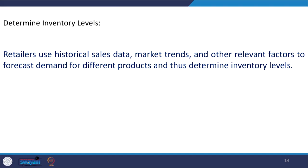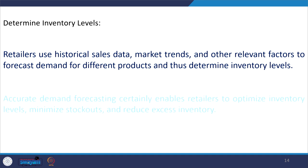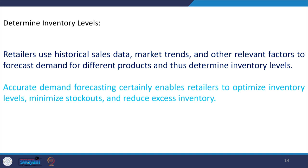Once assortment has been decided — these are the products that will be kept in retail stores — the next stage is to determine inventory levels. Retailers use historical sales data, market trends, and other relevant factors to forecast demand and thus determine appropriate inventory levels.